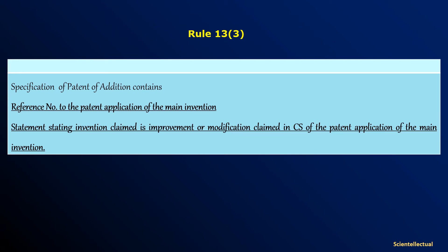The relevant rule is Rule 13 sub-rule 3. The specification of a patent of addition contains a reference number to the patent application of the main invention, and a statement stating that the invention claimed is an improvement or modification as claimed in the complete specification of the patent application for the main invention.